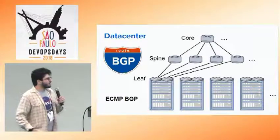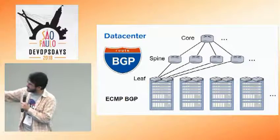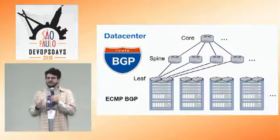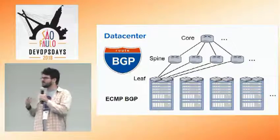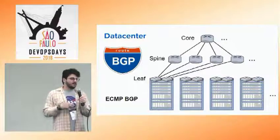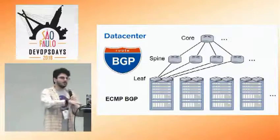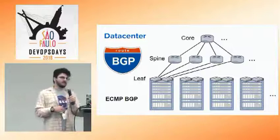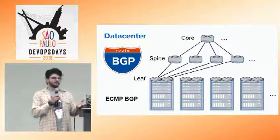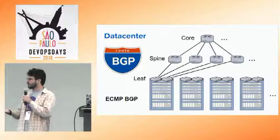Dentro do datacenter, a gente trabalha com uma topologia chamada FAT-TREE, onde a gente tem roteadores, os switches Spine e os switches topo de rack, que a gente chama de Leaf. Isso é interessante porque a gente consegue escalar o datacenter horizontalmente adicionando racks. Temos também os roteadores de borda — o core — que agrega esses switches e essa malha que a gente chama de fabric. Do core, dá para linkar com outros datacenters, como acontece com o datacenter de São Paulo. O Facebook e outras empresas também usam essa topologia, que é moderna e escalável. Para o roteamento entre os racks, a gente usa o mesmo protocolo que a internet, que é o BGP.